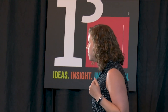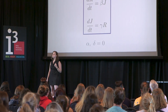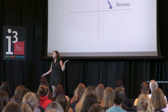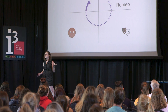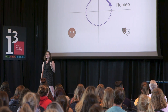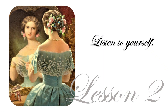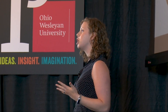But what if Romeo and Juliet only thought of each other? Then this set of coupled equations produces a periodic path that goes round and round in feelings of love and hate and misunderstanding forever — kind of like a never-ending rom-com. This brings us to lesson two: listen to yourself. Taking your own feelings into account is necessary for growth and change.